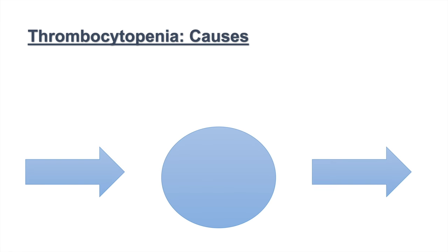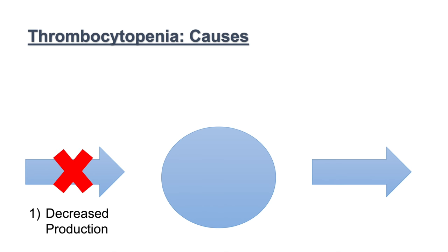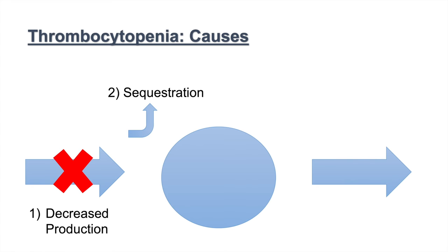There are four main categories of causes of thrombocytopenia. An easy way to think about this is to consider the total number of thrombocytes in the body as a pool, with input representing production and output representing removal. The first category is decreased production — if we decrease the amount of thrombocytes produced, the body pool decreases. The second category is sequestration, where platelets are rerouted and absorbed before entering the available pool.